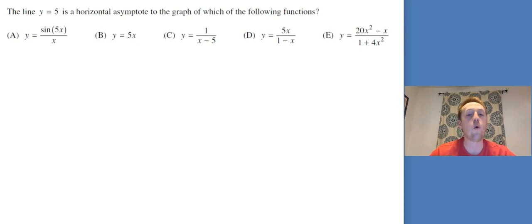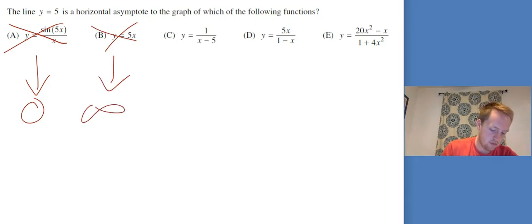The line y equals 5 is a horizontal asymptote to the graph of which of the following functions. Remember, horizontal asymptote means I want 5 to be the limit as x goes to infinity. For A, I've got a trig function over a polynomial linear function. Polynomials beat trig functions because trig functions are always between negative 1 and 1. So the bottom wins and this goes to 0.